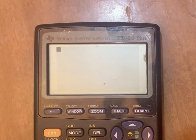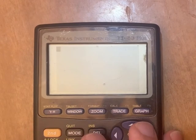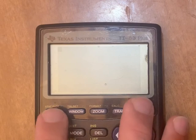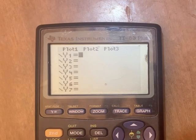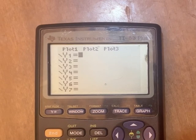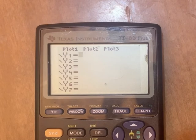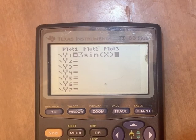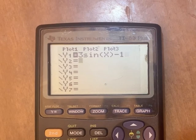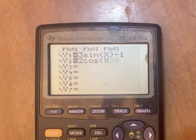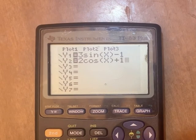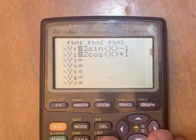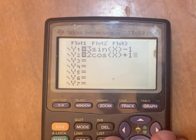So if you want to use your calculator to solve an equation by graphing, what you'll need to do is go to the y equals screen and type in your two equations. In this example, we have 3sin(x) - 1. And then the right-hand side of the equation was 2cos(x) + 1.